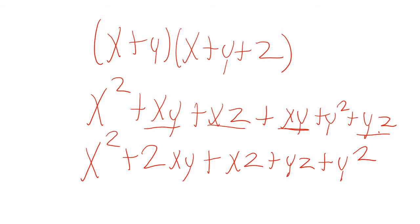This is our expansion process. We multiply each term here by every single term here: x gets multiplied by all the terms, y gets multiplied by all the terms. We sum them, combine all like terms, and we get to the expansion. Most of the time when you're multiplying polynomials and binomials, it's going to be related to area and geometry in math counts.